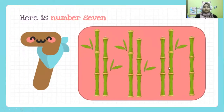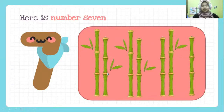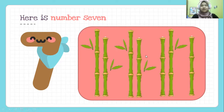We go to the next one. Here is number seven. Let's count together. How many stems are there? One, two, three, four, five, six, seven. That's right. Seven stems of bamboo represent number seven.